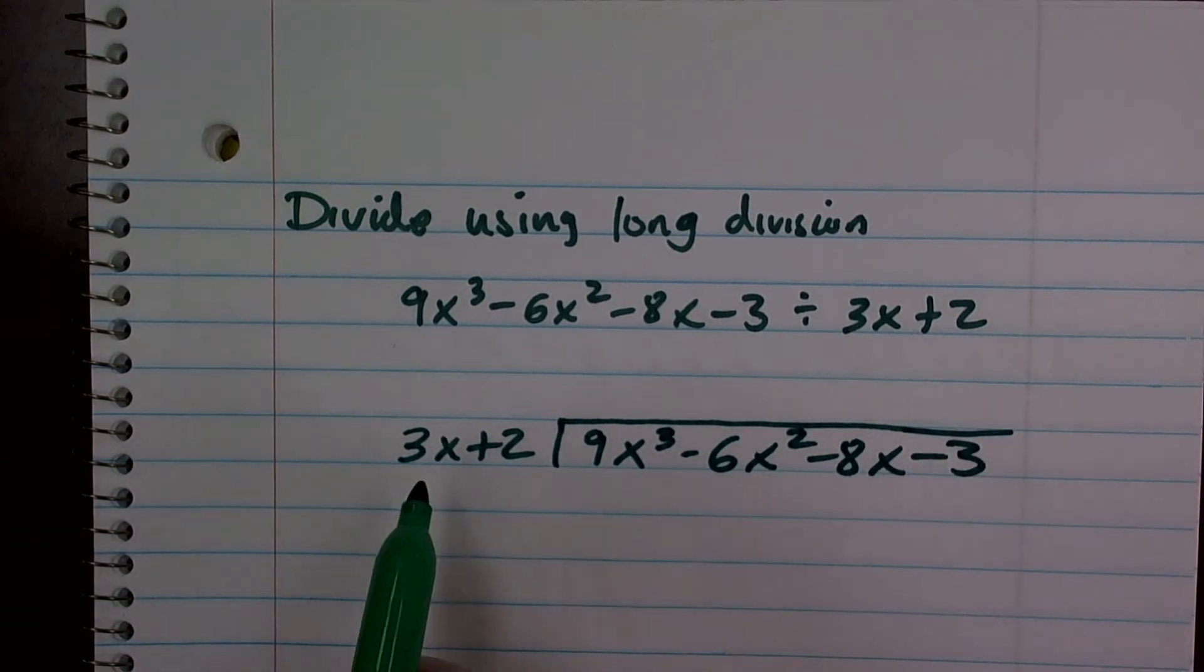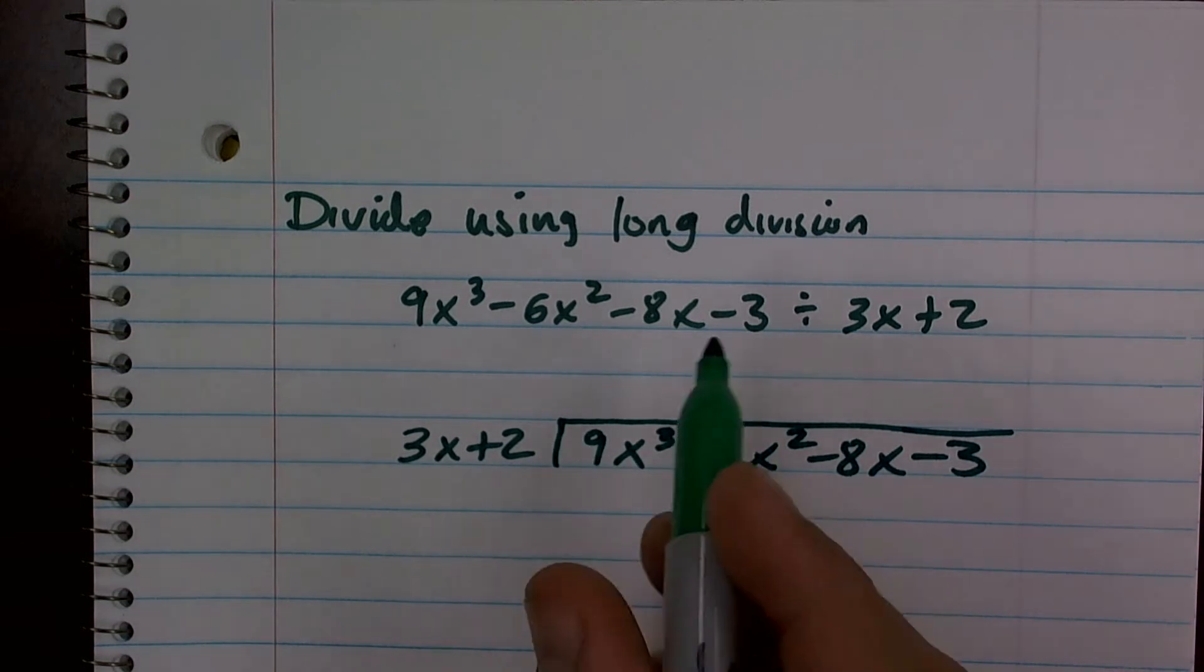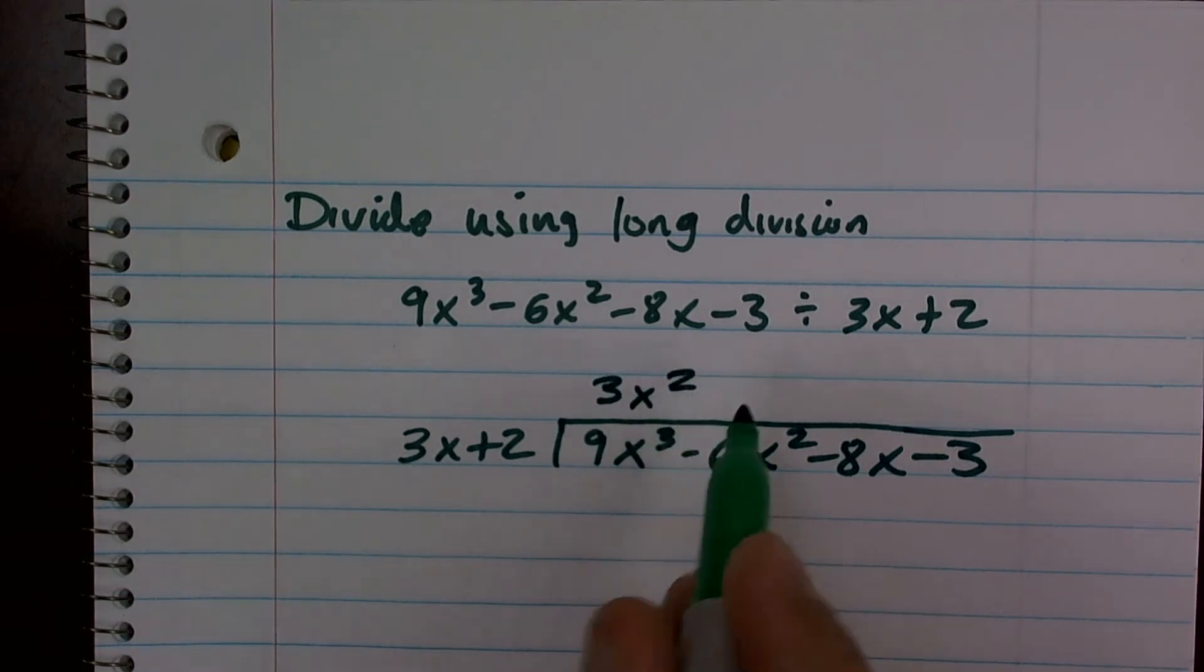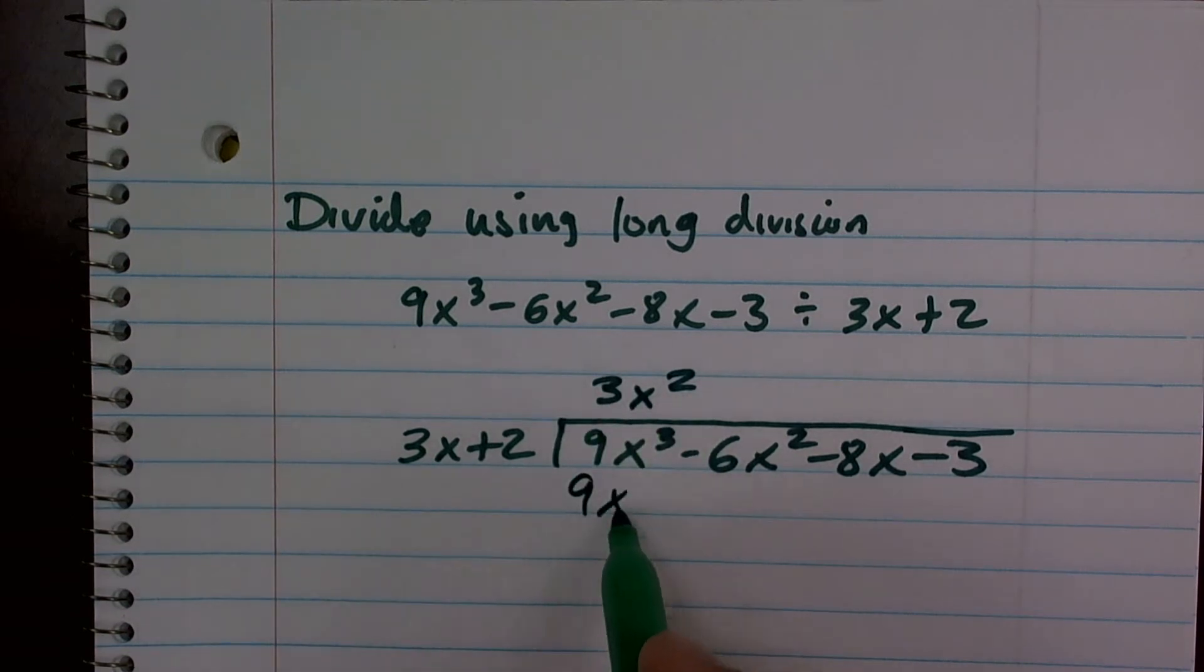Now, when doing this problem, how many times does 3x divide into 9x cubed? Well, 3x divides 9x cubed 3x squared times, and I know that's correct because 3x squared times 3x gives me 9x cubed.